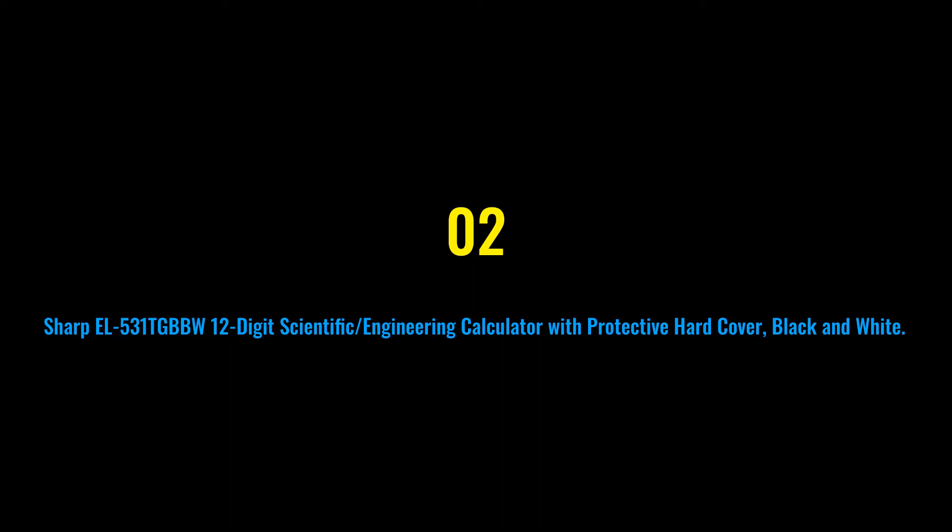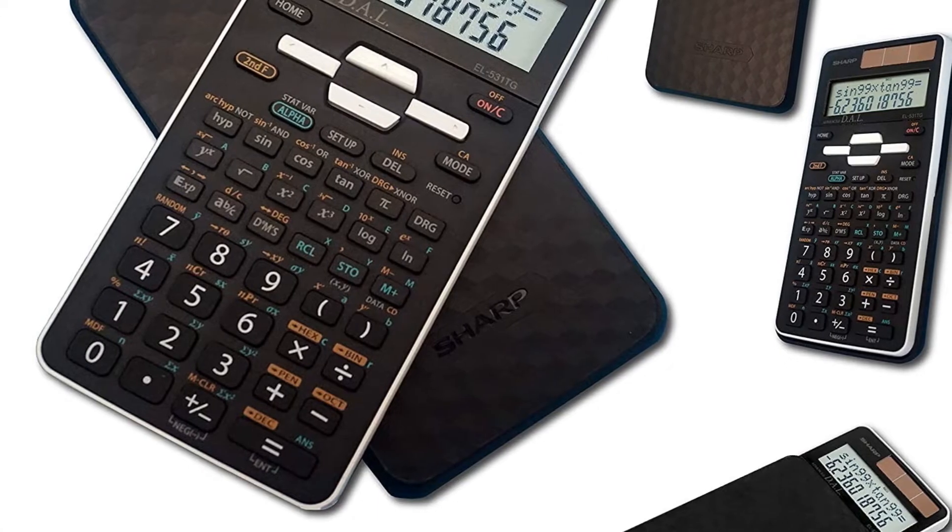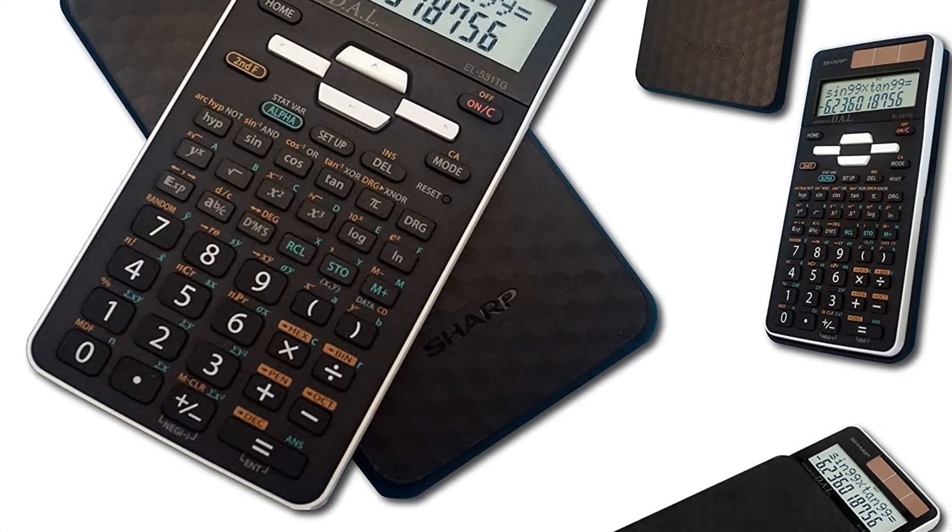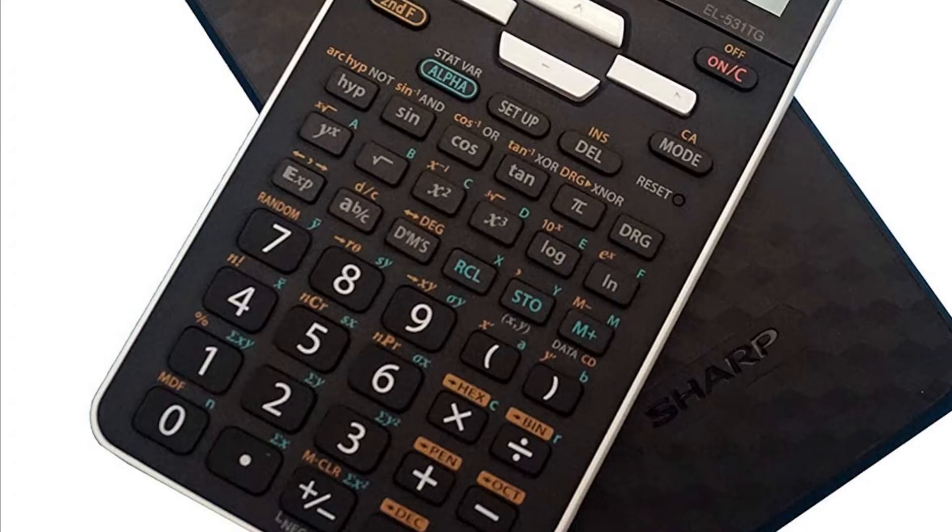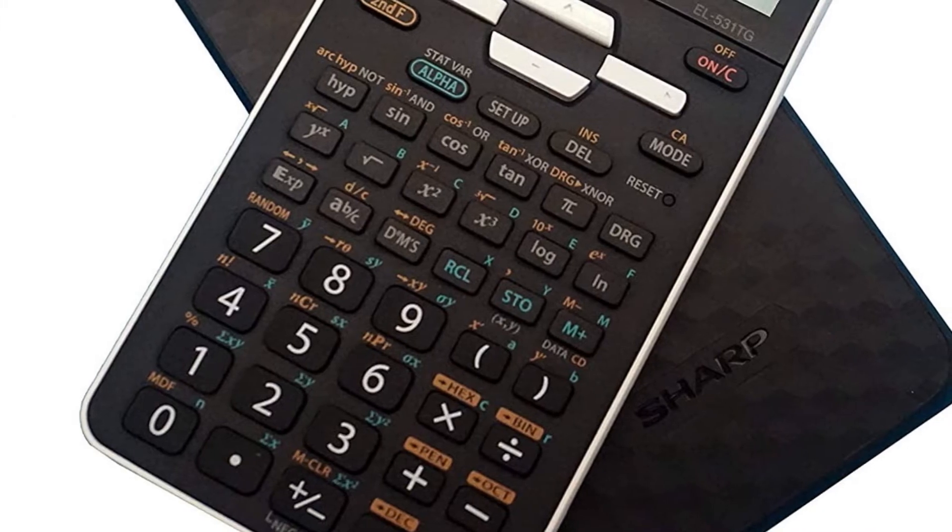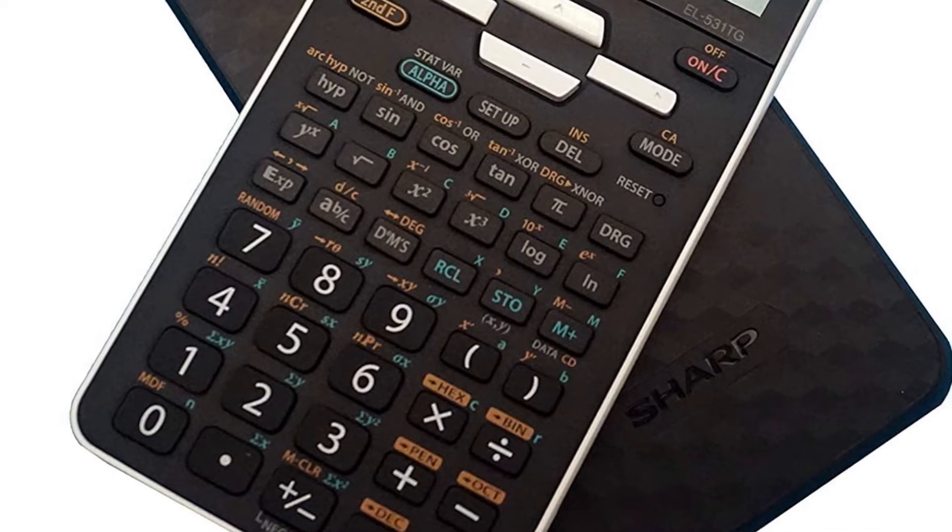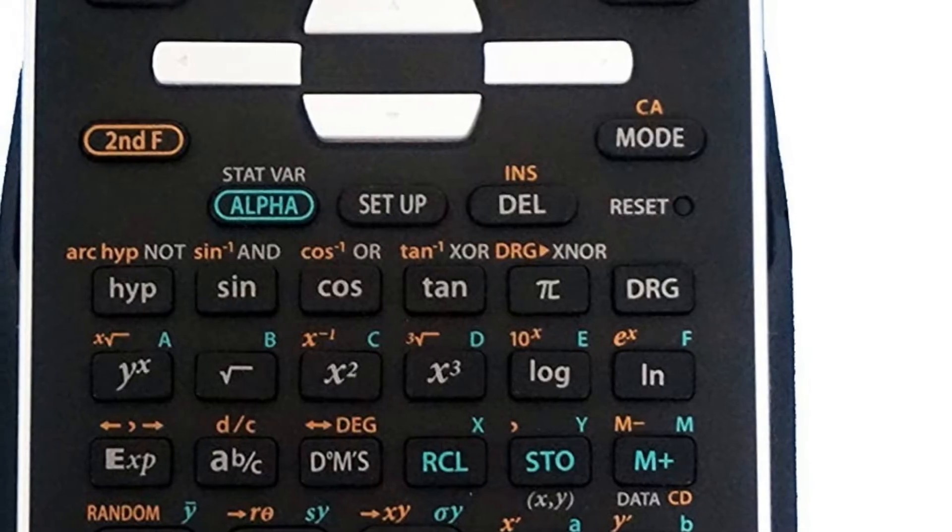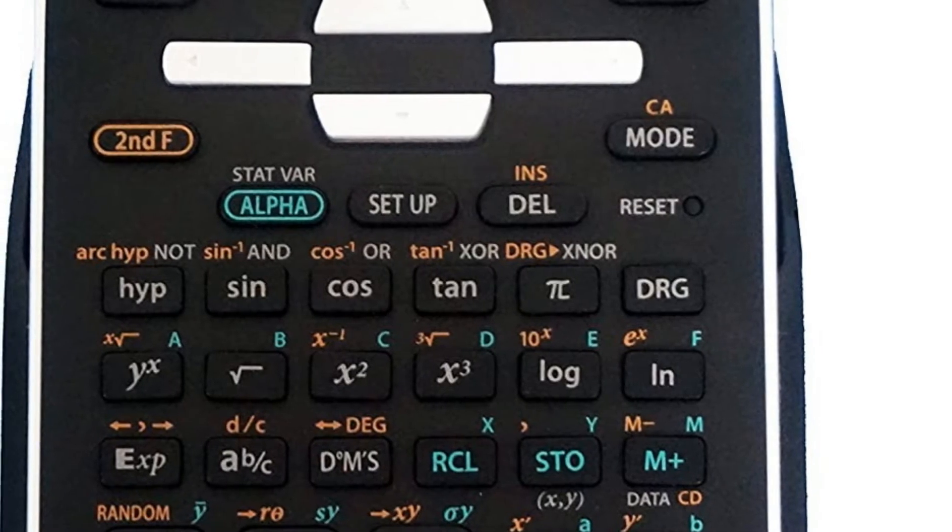Number two: Sharp EL531TGBBW 12-digit scientific/engineering calculator with protective hardcover, black and white. This model is perfect for students studying general math and science, pre-algebra, algebra, geometry, trigonometry, statistics, biology, and chemistry, and is comparable to the TI-30XIIS.